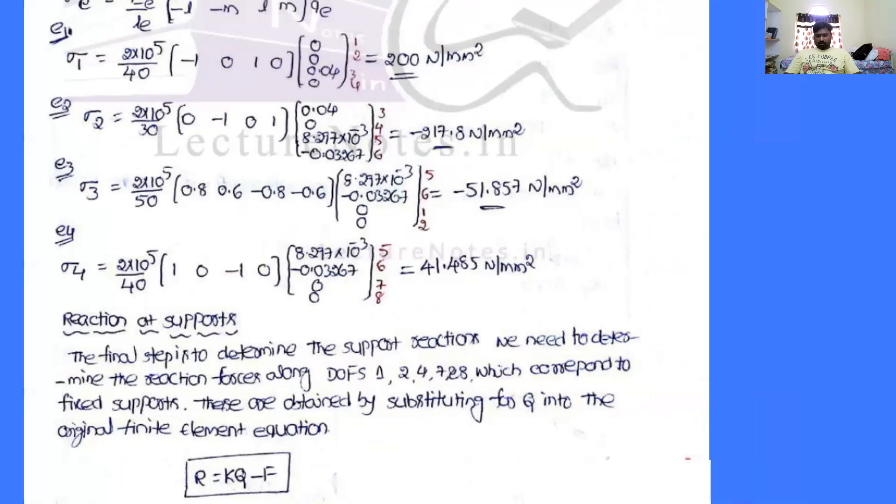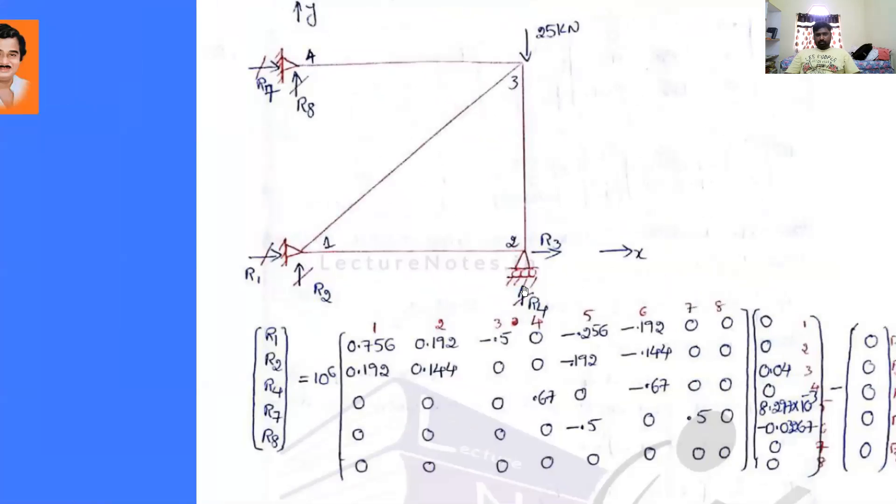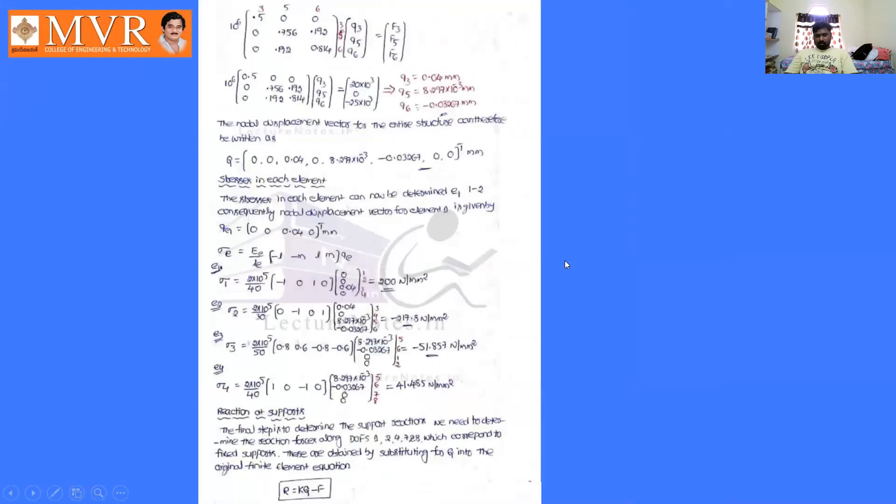Okay, so then we can see the degrees of freedom. So it is R1, R2, and R3, R4, R5, R6, R7, R8. So the inverse of freedom so 1, 2, 4, 7, and 8. 1, 2, 4, and 7. 1, 2, 4, and x-direction, and 8.